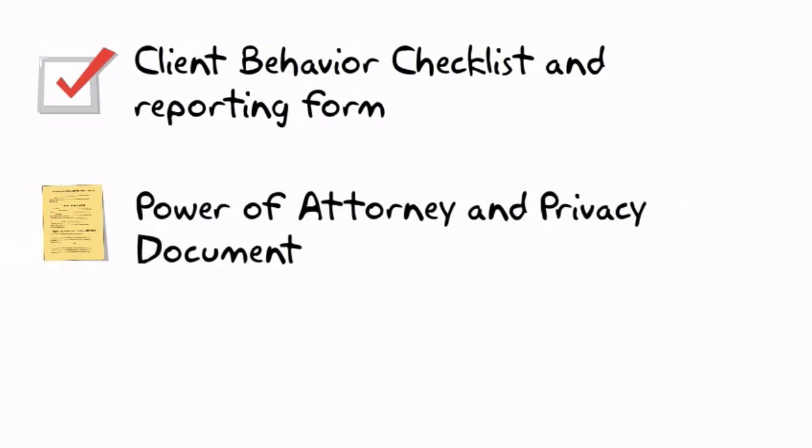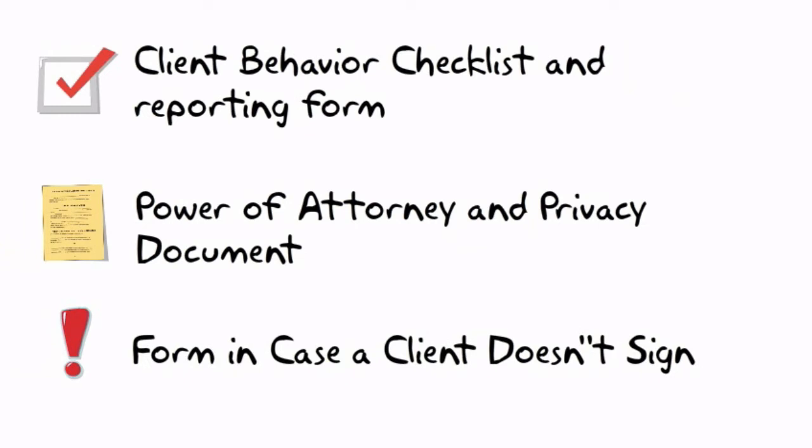These include your client behavior checklist and reporting form, your power of attorney and privacy document, and your form to use if a client refuses to sign the power of attorney and privacy document.